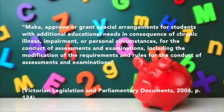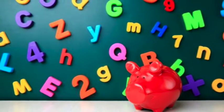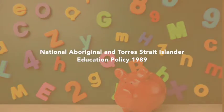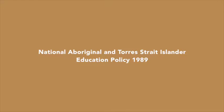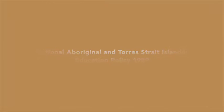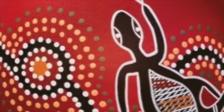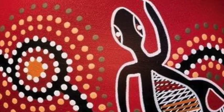The second policy implication is the National Aboriginal and Torres Strait Islander Education Policy 1989, which provides long-term goals and strategies to meet the education needs of Indigenous Australian students. Article 19 states that to achieve equitable and appropriate educational outcomes, the education system must enable Indigenous Australians' attainment of skills to the same standard as other Australian students throughout compulsory schooling and provide community education services to further develop their skills. This policy aims to improve the effectiveness of educational services for Indigenous Australians in achieving equitable and satisfactory educational outcomes.